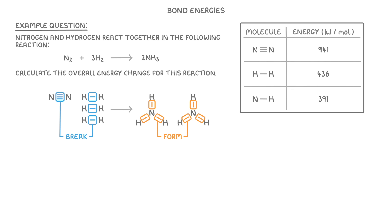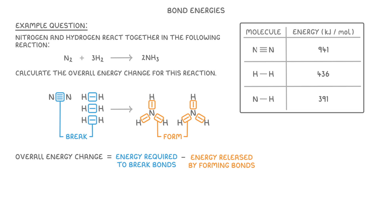So if we recall our equation, which stated that the overall energy change equals the energy required to break bonds minus the energy released by forming bonds, we can just plug in our numbers. So 1 times 941, plus 3 times 436, minus 6 times 391, which simplifies to 2249 minus 2346, giving us minus 97 kJ per mole.